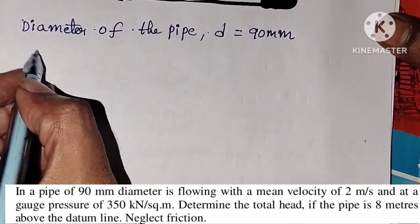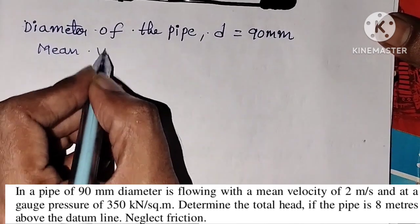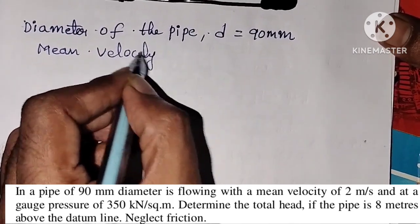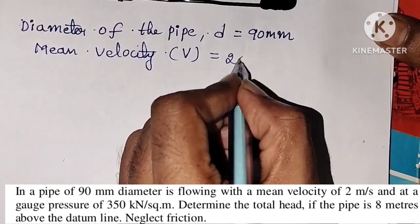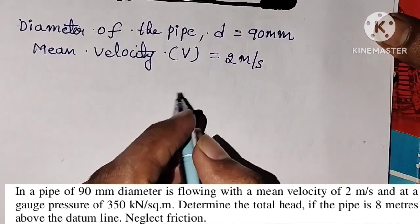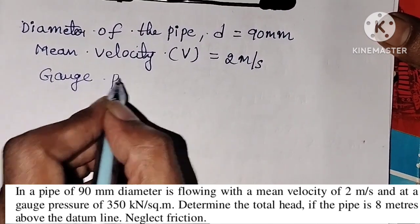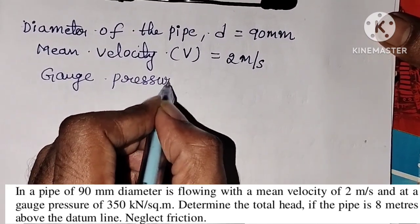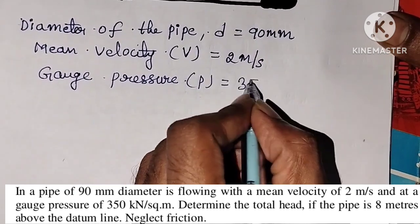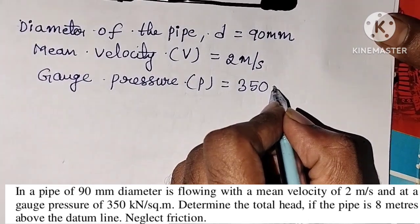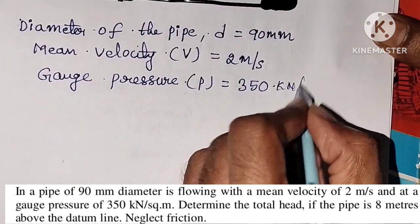Next, flowing with a mean velocity. V is equal to 2 meters per second. And gauge pressure, P is equal to 350 kilo-newtons per meter square.